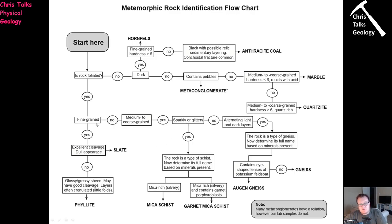If we have a foliation but the minerals are coarse to medium grained and our rock is not sparkly, that takes us into alternating light and dark layers — and alternating light and dark layers means a gneiss. There are actually two types of gneisses. The first type is the regular gneiss — we just have those light and dark bands. The second type is what's referred to as an augen gneiss. An augen gneiss has little eye-shaped crystals called augen, which are the result of the rock being sheared.